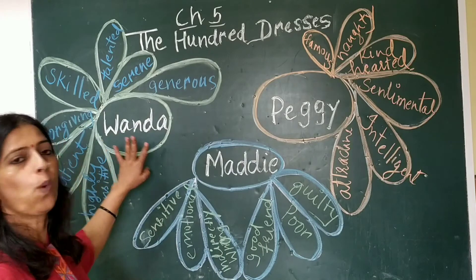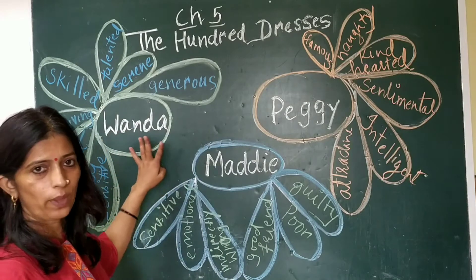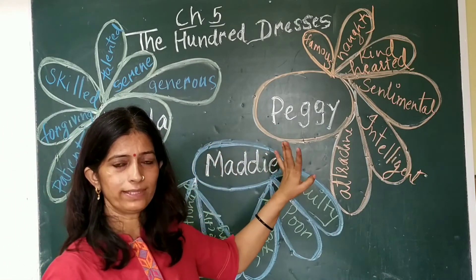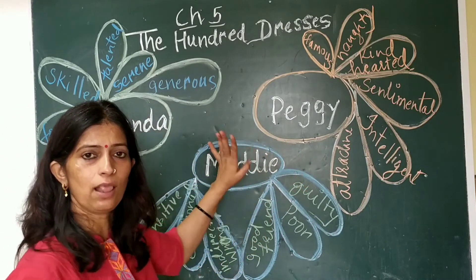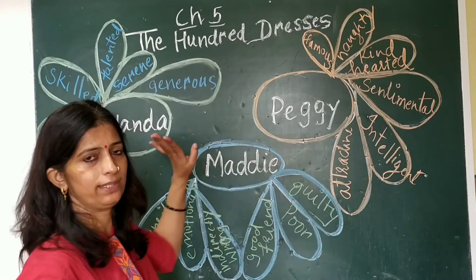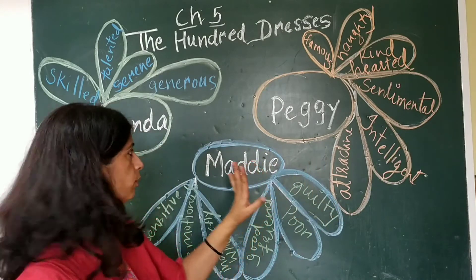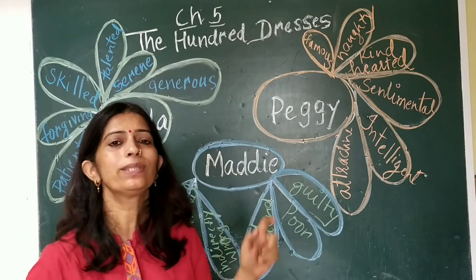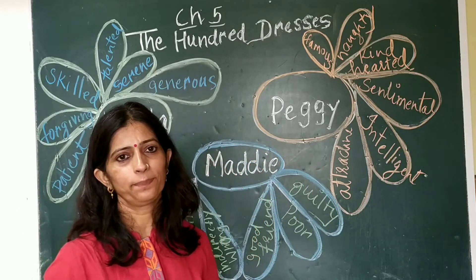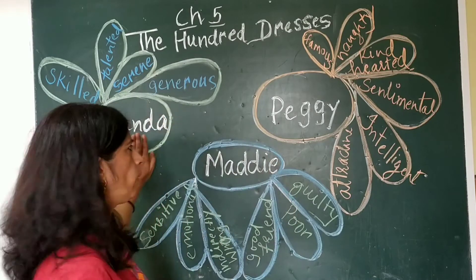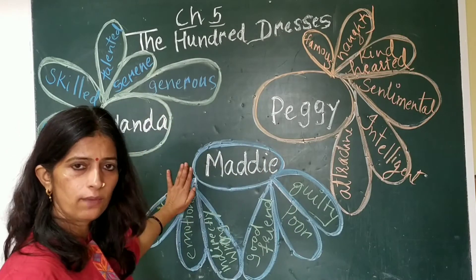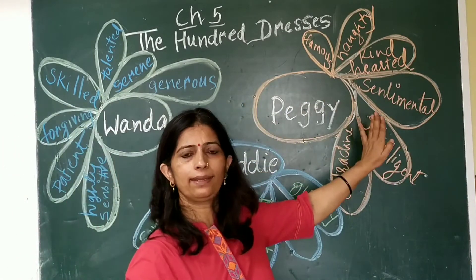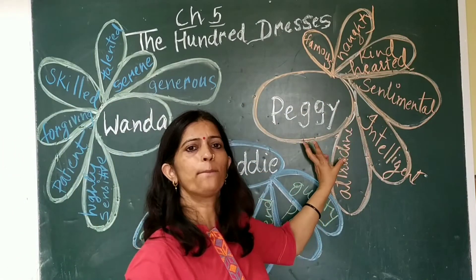So, this was about Wanda — a very good girl who had skill, who was patient, who tolerated everything but did not lose her temper. Now you can write this down. The second main character was Peggy.